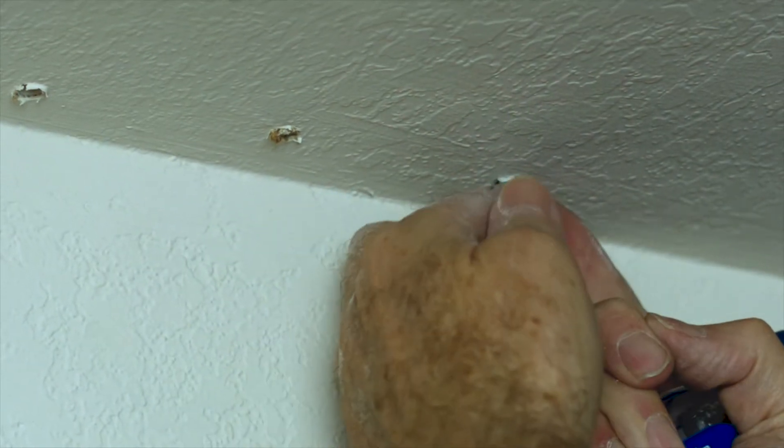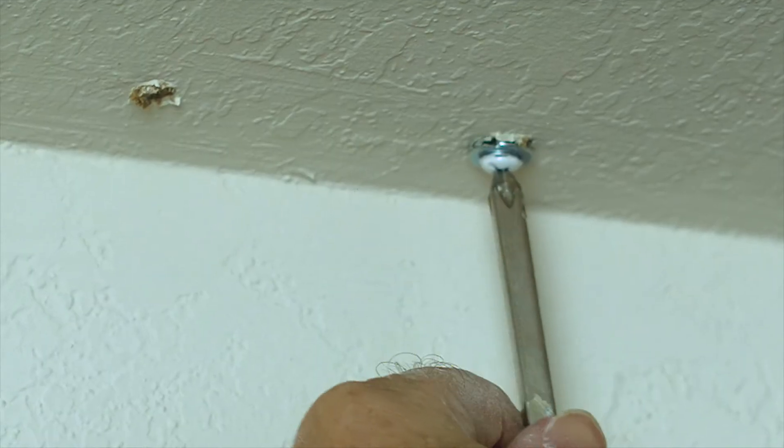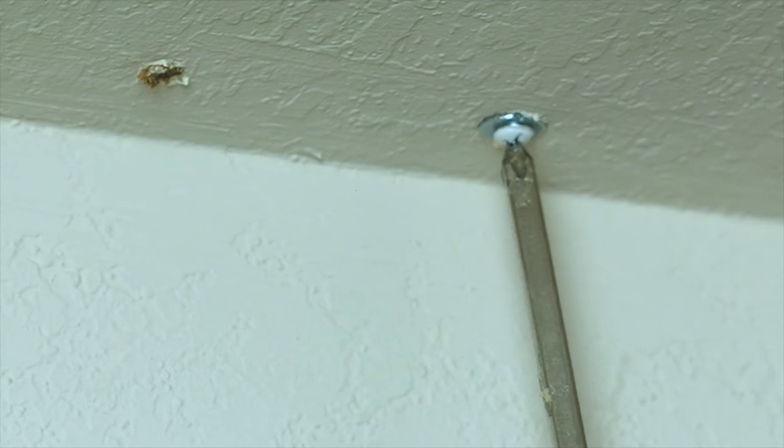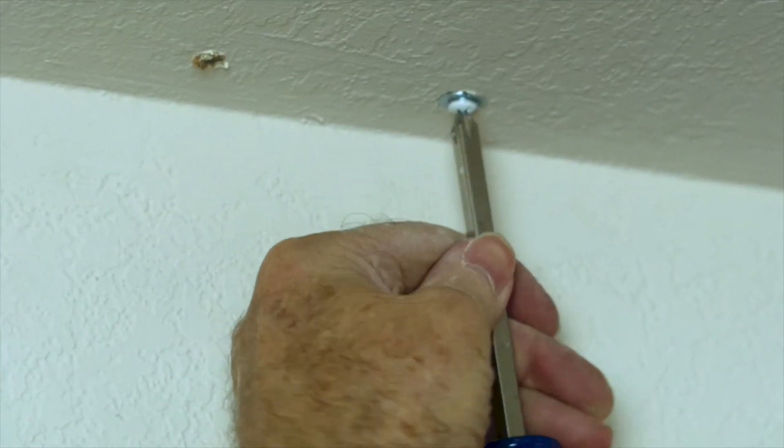For each hole, insert a molly bolt into the hole until the screw head is flush against the ceiling. Turn the screw clockwise so the slotted sleeve expands inside the ceiling. Stop turning when you feel resistance.